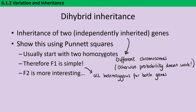And then when we look at the F2 generation, where two individuals from the F1 generation have been bred together, that's when things start to get more interesting and where we get this classic 9 to 3 to 3 to 1 ratio.